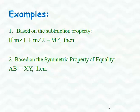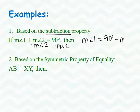On these examples, it says number 1, based on the subtraction property, if the measure of angle 1 plus the measure of angle 2 is equal to 90 degrees. Then, well since this is the subtraction property, or they're wanting me to use the subtraction property, I know I'm going to subtract. So let's do this problem first by subtracting the measure of angle 2. And remember from algebra, what I do on one side, I have to do to the other. So once I subtract the measure of angle 2, I'm left with the measure of angle 1 is equal to 90 degrees minus the measure of angle 2.